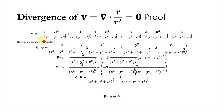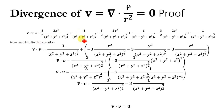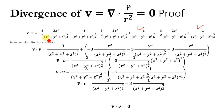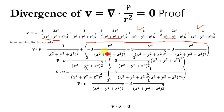Adding all three contributions, the three terms of the form 1/(x²+y²+z²)^(3/2) — one each from x, y, and z — add up to give 3/(x²+y²+z²)^(3/2). The negative terms involving −3x², −3y², and −3z² are grouped with the common factor −3/(x²+y²+z²)^(5/2).